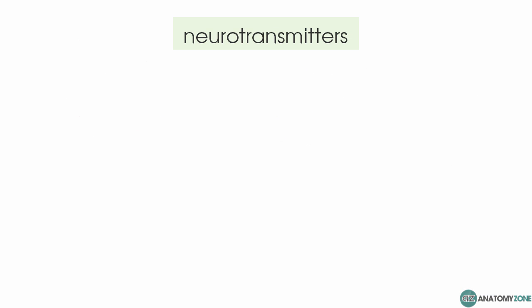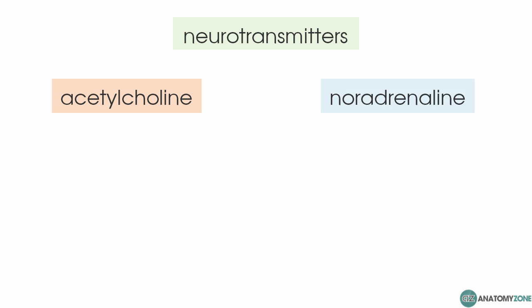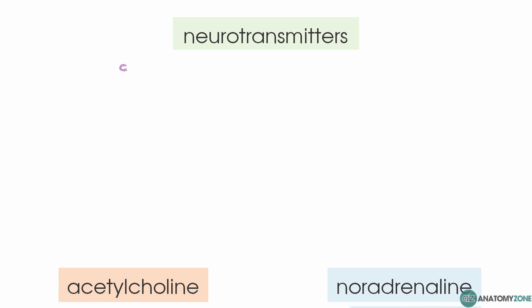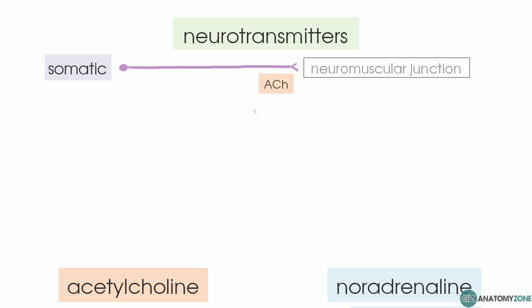The next thing to discuss is the neurotransmitters within the autonomic nervous system. There are two main neurotransmitters: acetylcholine and noradrenaline — noradrenaline being the same as norepinephrine. In the somatic nervous system, the motor neuron releases acetylcholine at the neuromuscular junction.